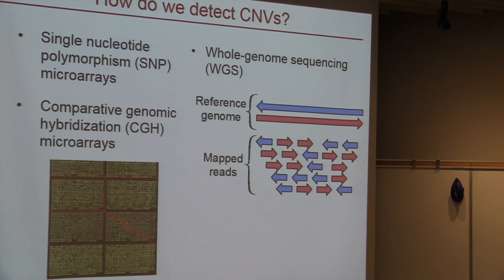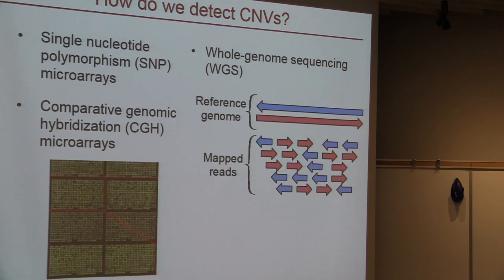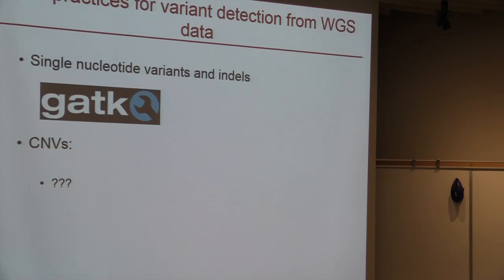Whole genome sequencing covers the entire genome, whereas microarrays only cover parts of the genome that are of interest. It also has better resolution — theoretically, you can detect CNVs with base pair resolution, not just at an approximate genomic location. Whole genome sequencing is also theoretically better at detecting all sizes of CNVs. So we want to move towards whole genome sequencing for detecting CNVs, but the question is how exactly do we do this.